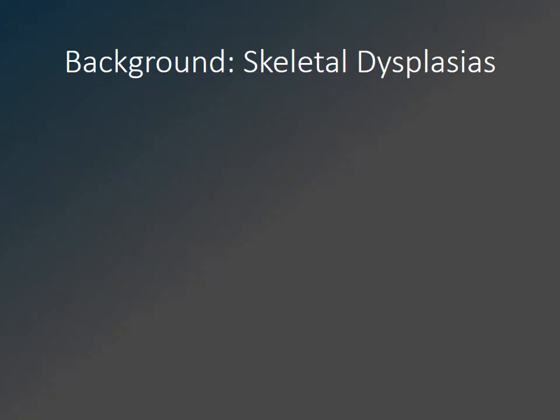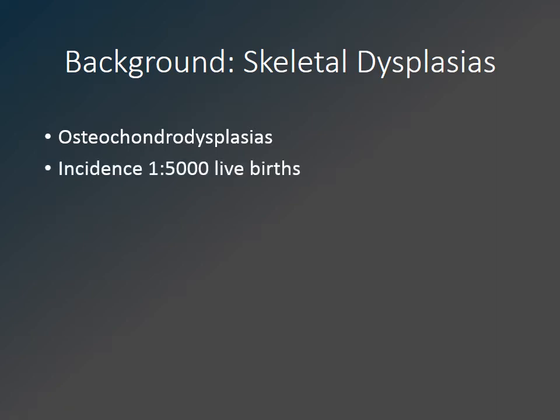Skeletal dysplasias can be considered generalized disorders of the bones and cartilage, also referred to as osteochondral dysplasias. Many have other clinical and molecular or genetic abnormalities in addition to the radiographic abnormalities. Their overall incidence is approximately 1 in 5,000 live births.